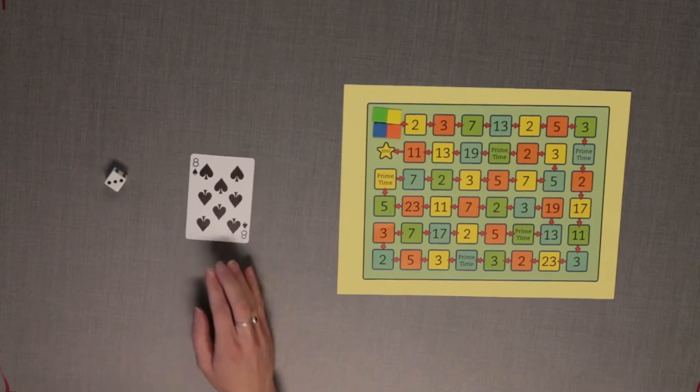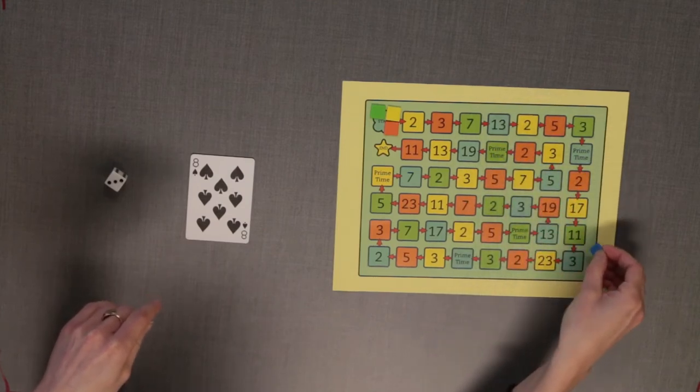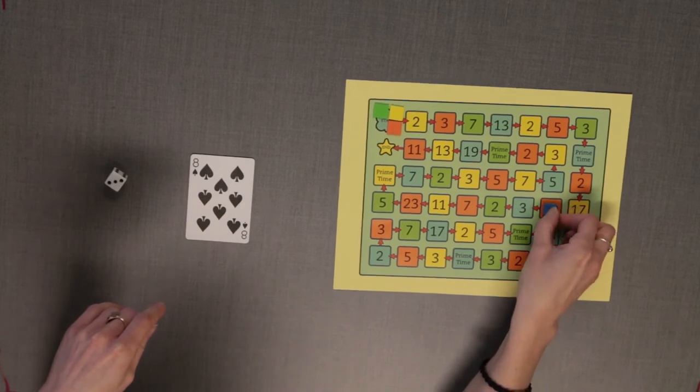The player will ask themselves if the number is prime. If not, they will determine if the factors of the number are prime. They may move their marker to the next occurrence of one of the prime factors.